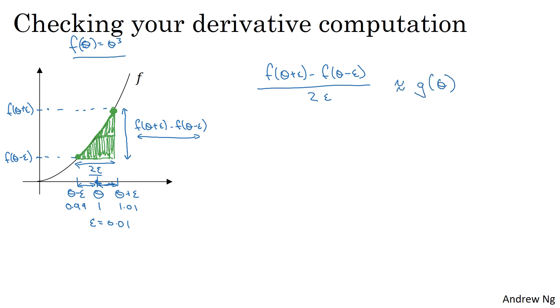So plugging in the values, remember f of theta is theta cubed. So this is theta plus epsilon is 1.01, so I'll take the cube of that minus now 0.99, take the cube of that divided by 2 times 0.01. If you're free to pause the video and plug this in the calculator, you should get that this is 3.0001. Whereas from the previous slide we saw that g of theta, this was 3 theta squared, so when theta equals 1, this is 3.